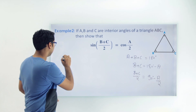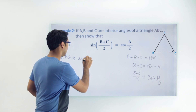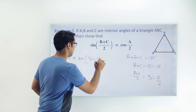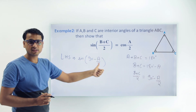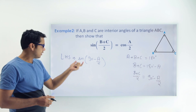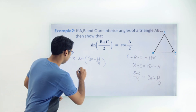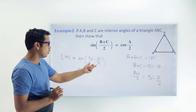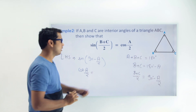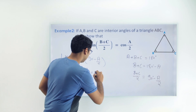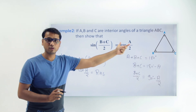So the LHS can be written as sin(90° − A/2). We had broken (B + C)/2 into 90 minus its complementary angle. Now we can easily change sin into its complementary function, which is cos. So this becomes cos(A/2), and this is our RHS. So we have proven that sin((B + C)/2) = cos(A/2).